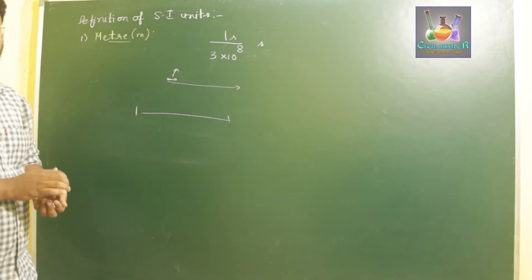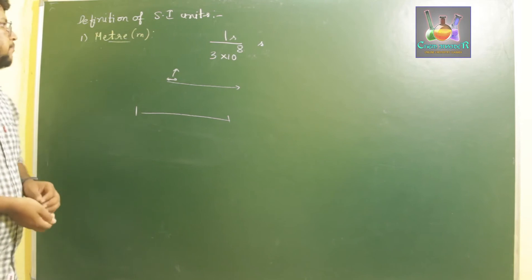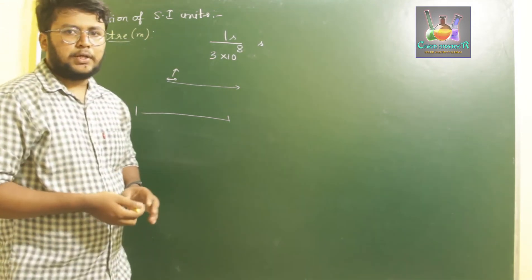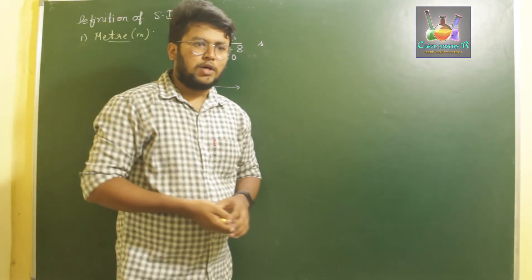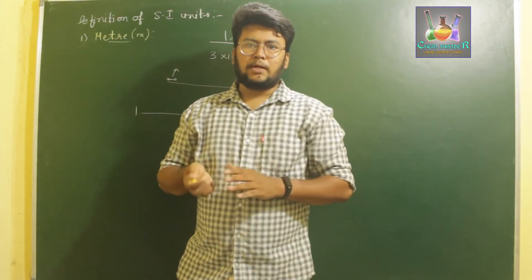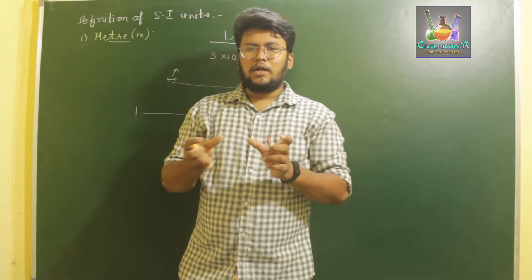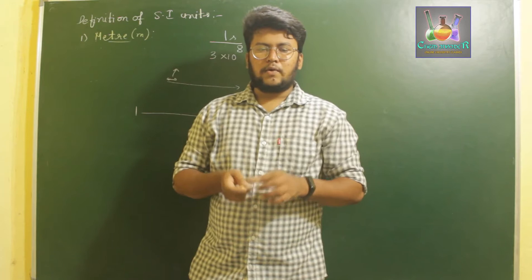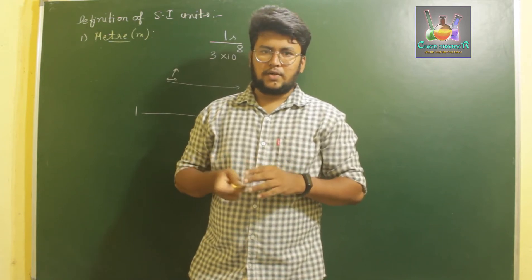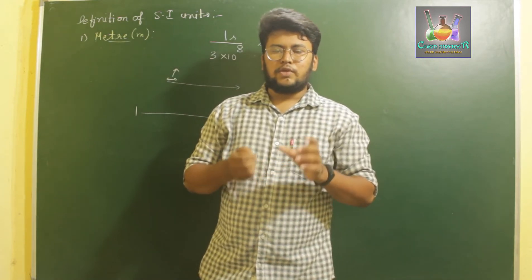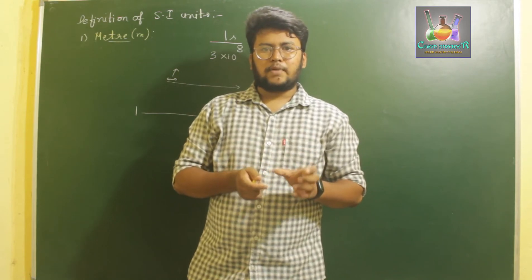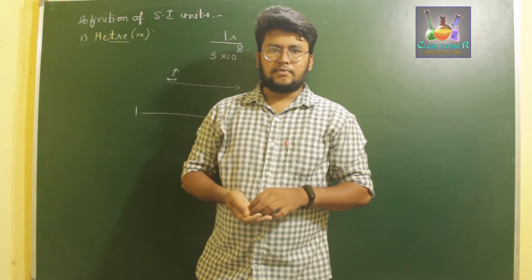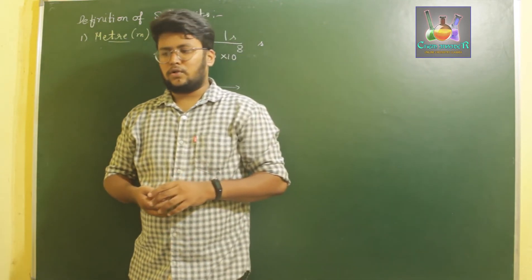That is the definition of meter. Next is the definition of kilogram. We don't actually have a particular specific definition for kilogram because in the SI unit system we use a prototype — something used for comparison of masses. We have an exact one-kilogram mass in the SI unit system's standards chamber used as a comparison for normal kilogram measurements. So we don't have a specific definition for kilogram.